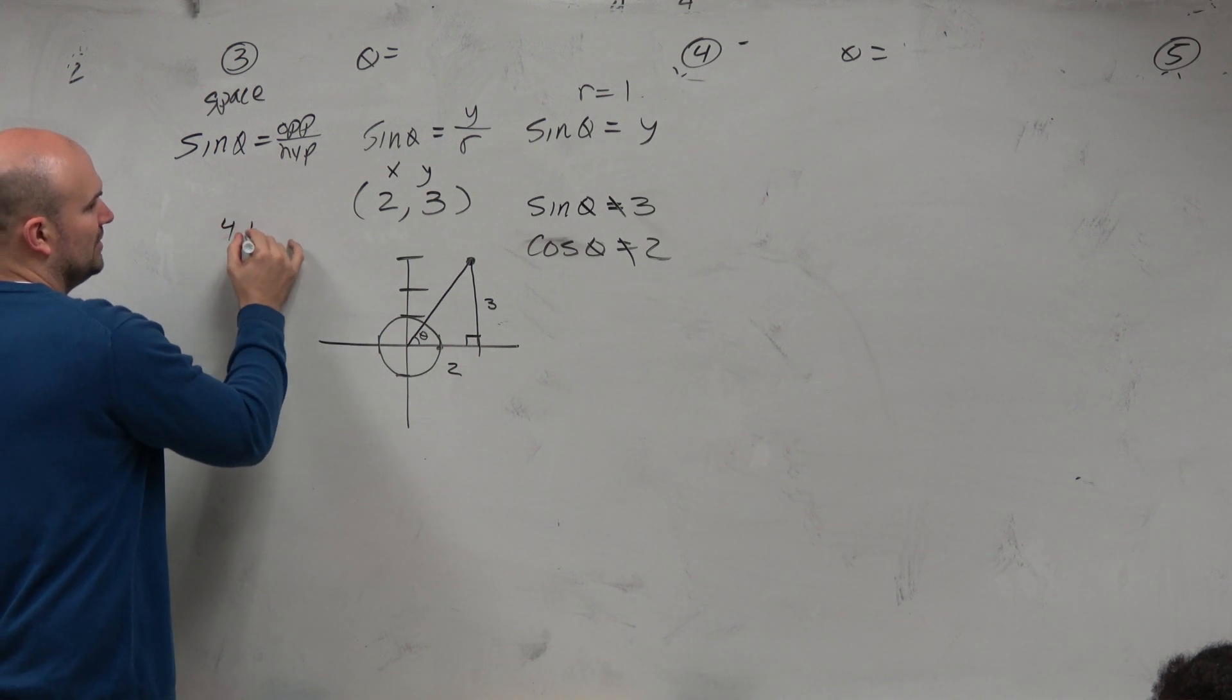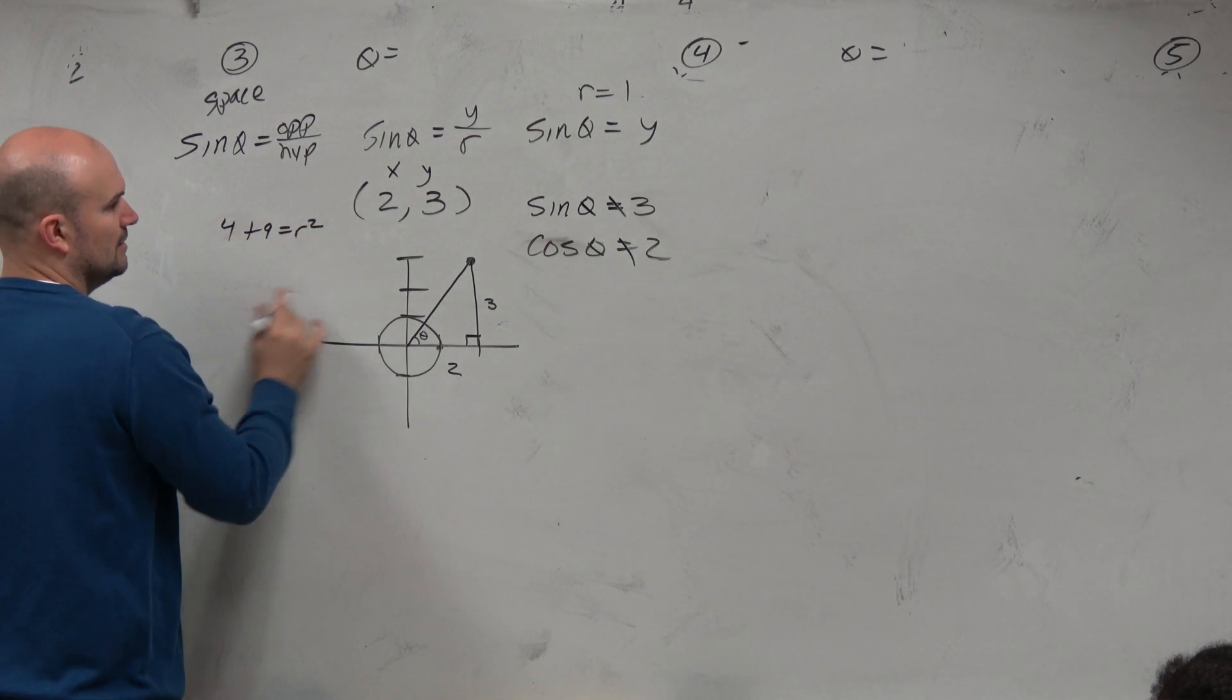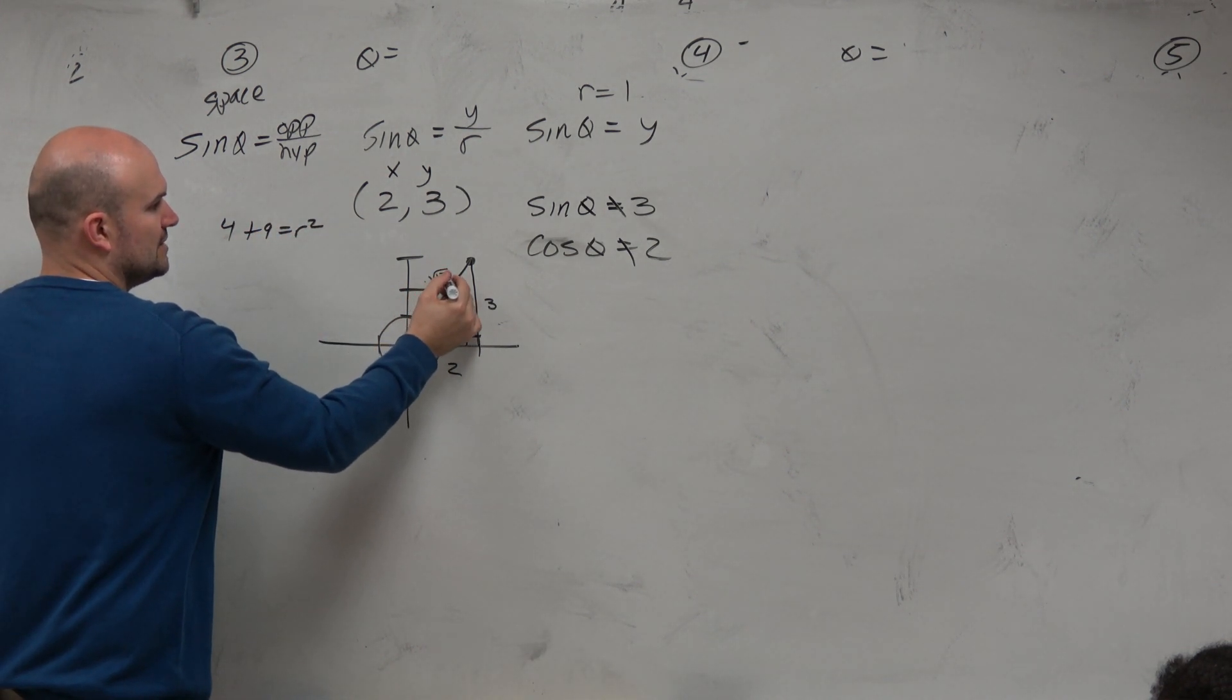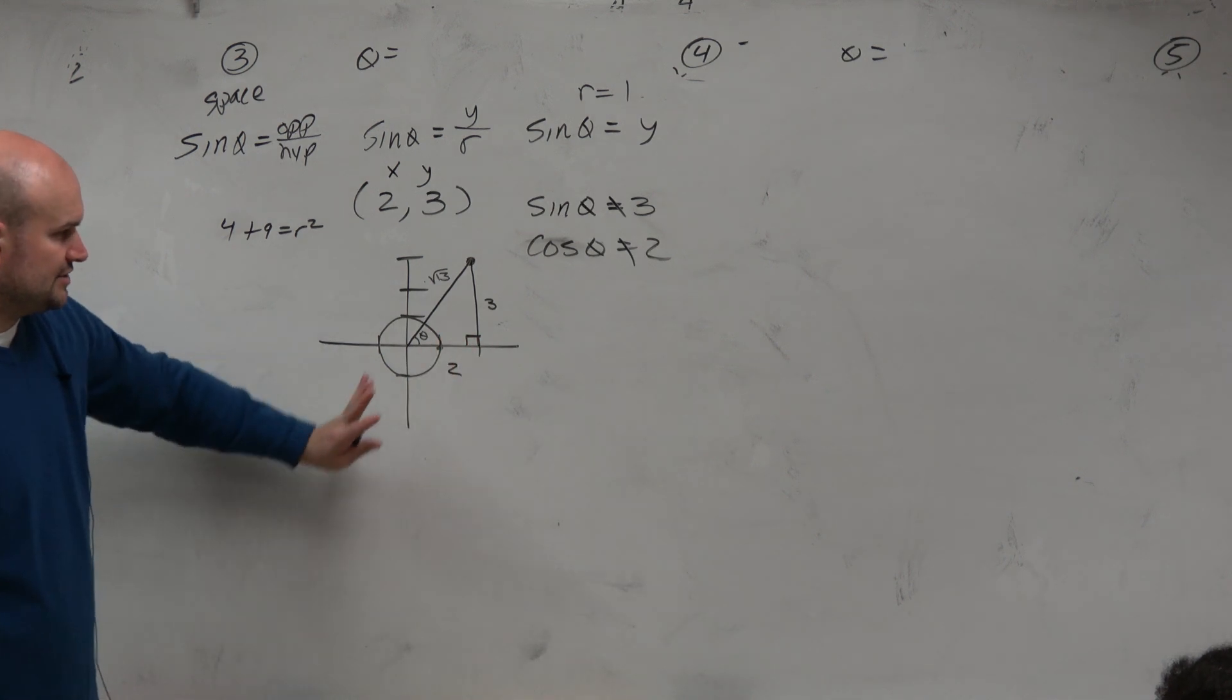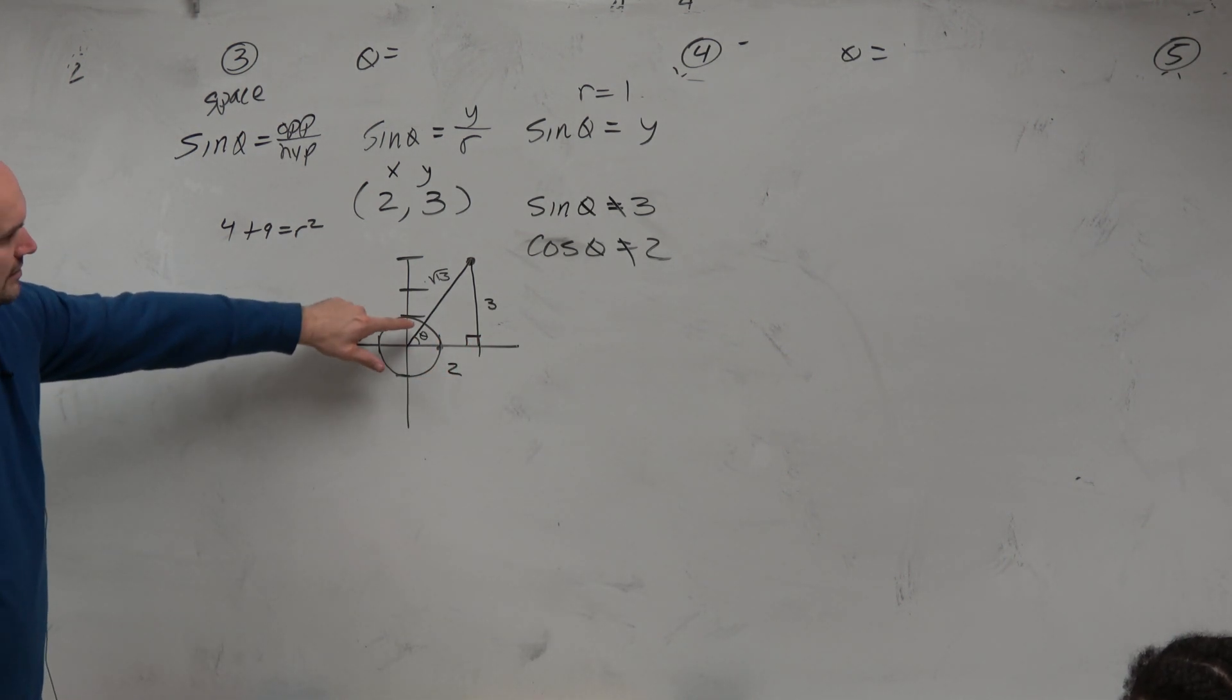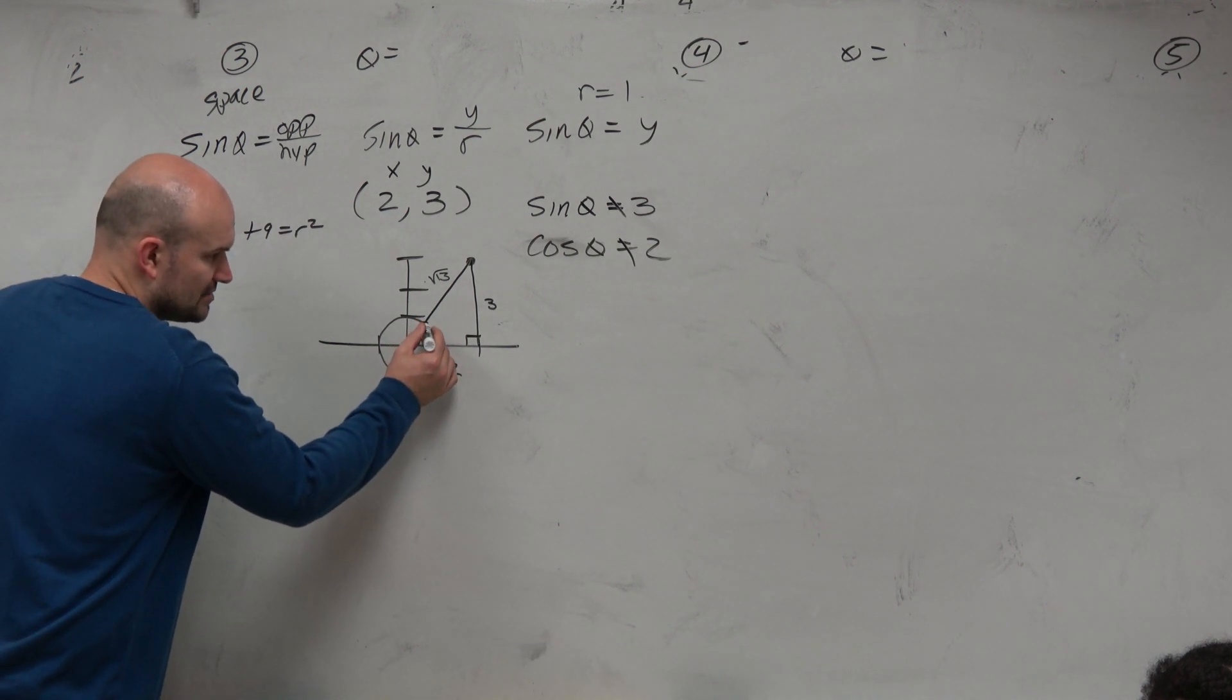And then if you do the Pythagorean theorem real quick, let's see, what would you get? You get 4 plus 9 equals r squared. So r equal to the square root of 13. Now, before I get to that, does anybody know what the point is on this unit circle?